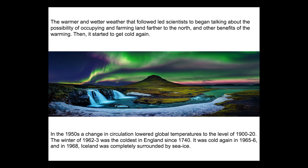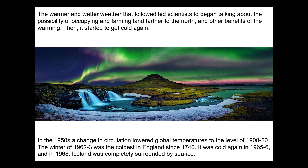The warm and wet weather that followed led scientists and farmers to think about moving further north — there was a lot of flat, farmable land with long summers. Then it started to get cold again. In the 1950s, a change in circulation lowered global temperatures to approximately where they were in 1900 and 1920. There were severely cold winters in 1962 and 1963 — the coldest in England since 1740 — and again in 1965, 1966, and 1968.